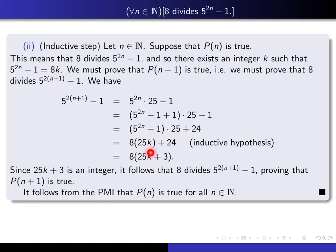And now you see, since 25k plus 3 is an integer, we deduce that 8 divides this thing here. In other words, 8 divides that. That's exactly what we needed in order to prove that P(n+1) is true. And so we have the right to say that it follows from the principle of mathematical induction that P(n) is true for all n, and that completes the proof.